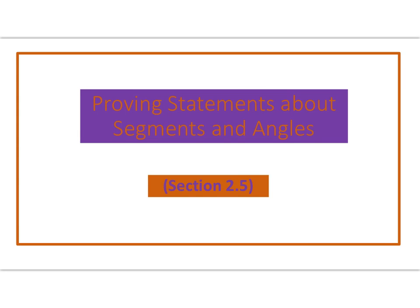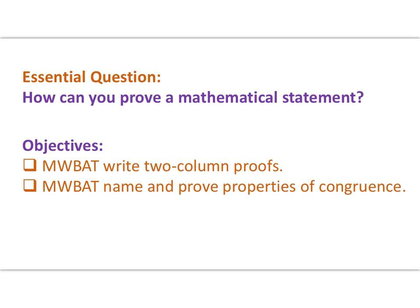All right, mathematicians, let's continue with our proofs — proving statements about segments and angles, section 2.5. Our essential question is: how can you prove a mathematical statement? Our objectives are that mathematicians will be able to write two-column proofs, as we practiced yesterday with our algebraic proofs, and also name and prove properties of congruence.